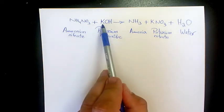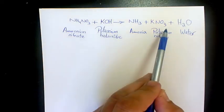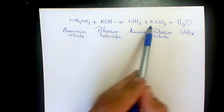On the reactant side, we have one atom of potassium, and here we have one atom of potassium, so K is balanced.